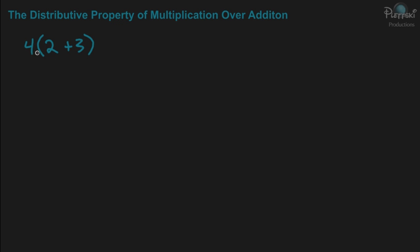The distributive property says you have to multiply the 4 times 2, and then also multiply 4 times 3, and you do that in order to get rid of the parentheses. So what that looks like is 4 times 2, and then plus 4 times 3.